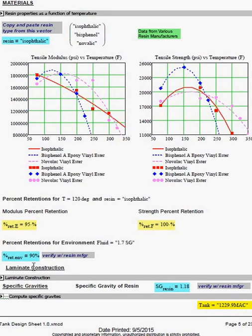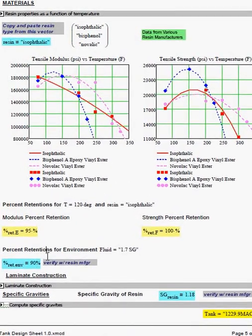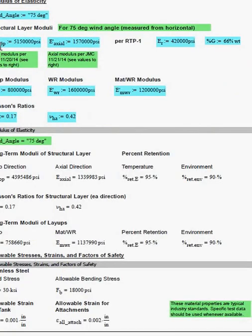There's also an input for environmental percent retention, if so desired. The wind angle is input here for reference.